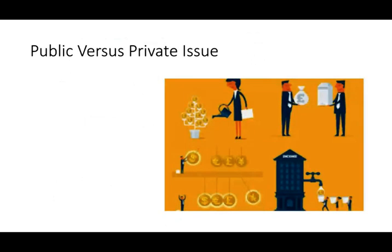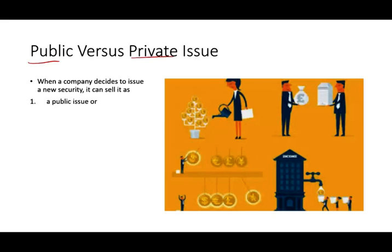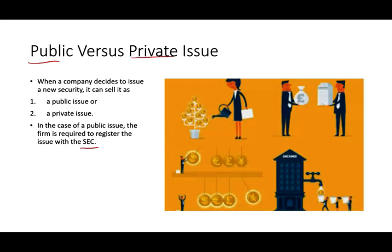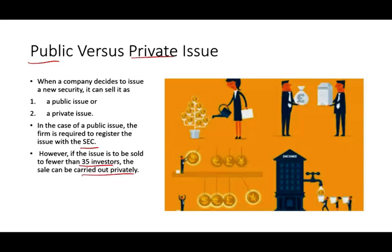The first thing we need to differentiate when selling stocks or bonds to raise money is whether it's a public or a private issue. When a company decides to issue a new security, it can sell it either as public — meaning to everyone — or as a private issue, which means to particular investors. In the case of a public issue, the firm must register with the SEC. However, if the issue is to be sold to less than 35 investors, the sale can be carried out privately. Because it's a small number of people, the SEC assumes those people know what they're doing, so a registration statement is not required.